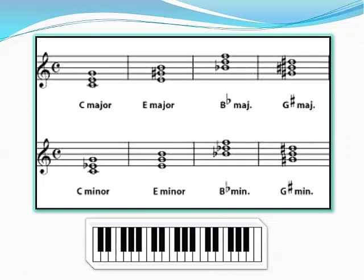The second triad is E major. It's a major triad because E to G-sharp is a major third. The B-flat major triad is major because B-flat to D is a major third. The G-sharp major triad has a major third from G-sharp to B-sharp. Now I'll play these all for you.